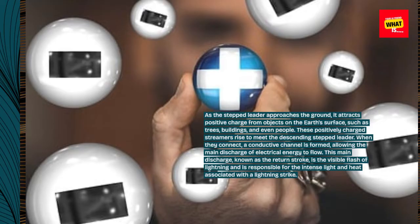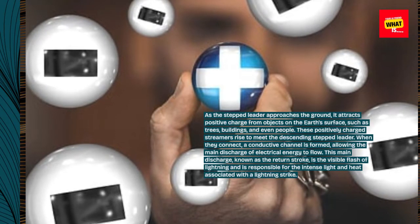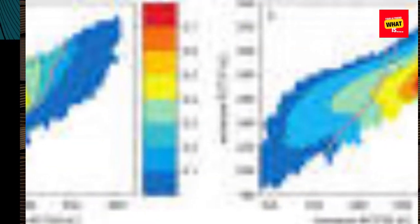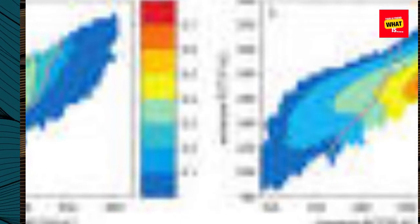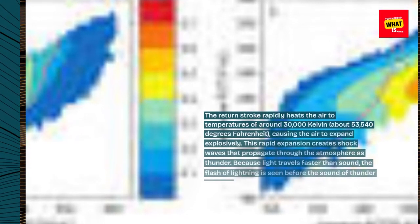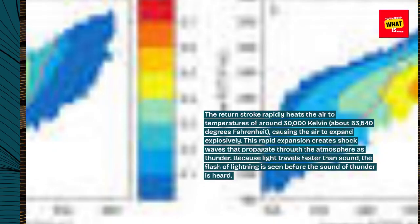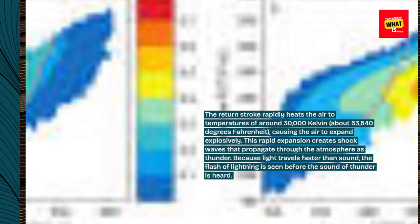This main discharge, known as the return stroke, is the visible flash of lightning and is responsible for the intense light and heat associated with a lightning strike. The return stroke rapidly heats the air to temperatures of around 30,000 Kelvin, about 53,540 degrees Fahrenheit, causing the air to expand explosively.